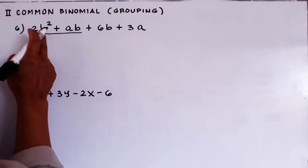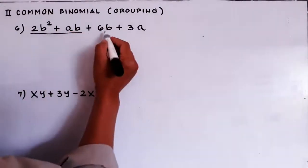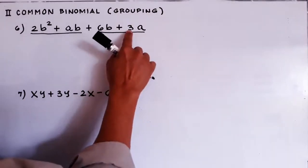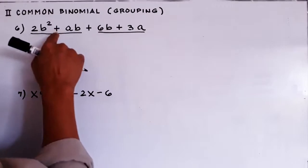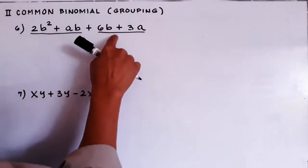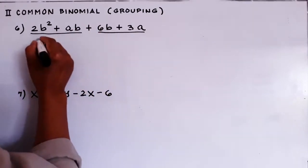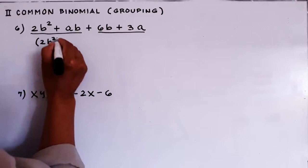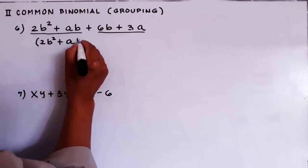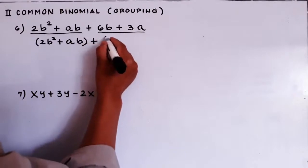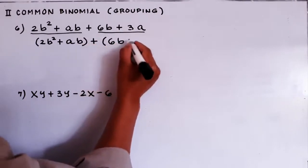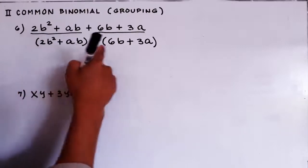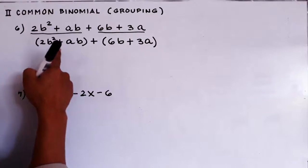Do we have a common monomial here? Yes, the B and the B are common. What about 6B and 3A — do you have a common monomial there? Yes, 3 is a common monomial. So if we have a common monomial in the first group and a common monomial in the second group, you can proceed. We put the first group in parentheses: 2b squared plus ab, then copy the plus, and then bracket 6b plus 3a.